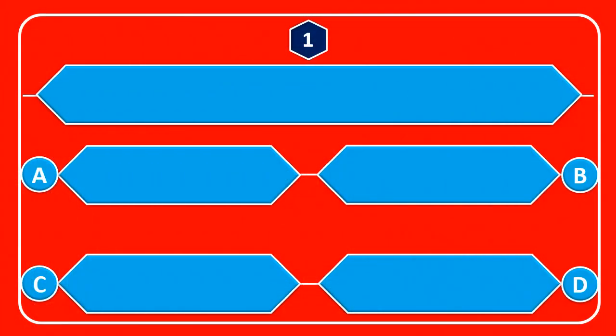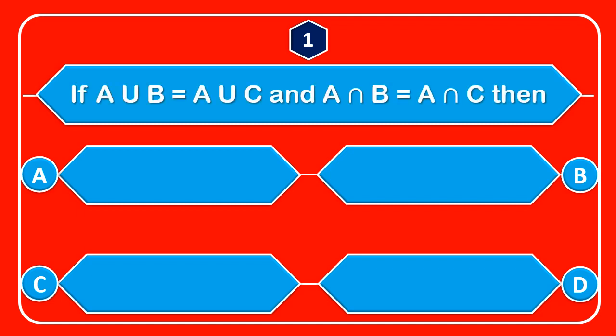Maths Quiz on Sets. Question number 1: If A union B is equal to A union C and A intersection B is equal to A intersection C, then what can we conclude?